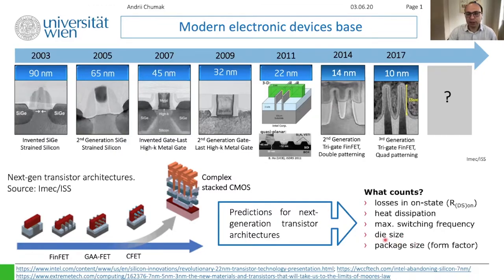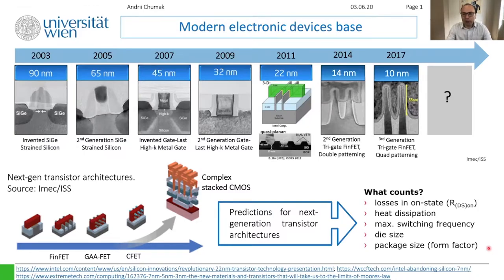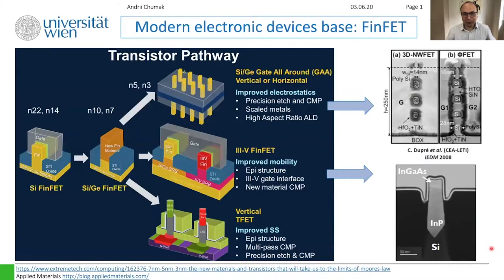Max switching frequencies, die size — each wafer is cut into dice and you want each chip as small as possible — and packaging size: we want everything as small as possible, as fast as possible, and using as little energy as possible. This is the challenge for each technology generation.